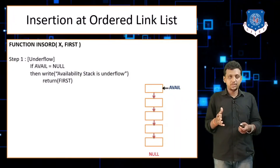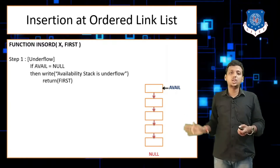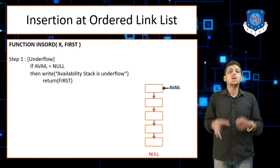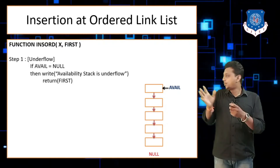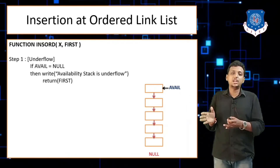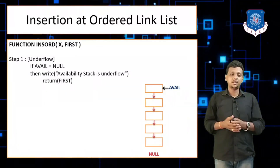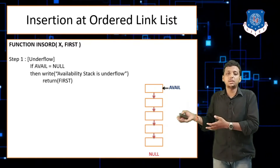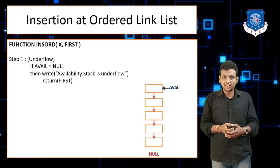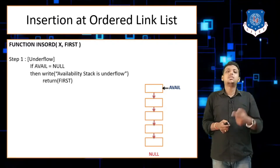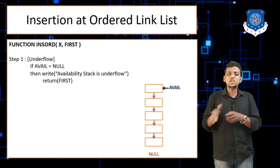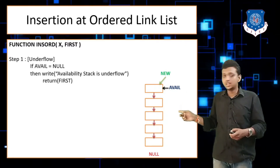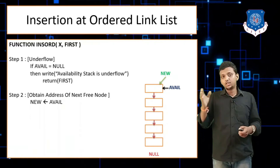When underflow occurs, write return first. In the insertion algorithm we return the value of the first node of the list — that is the pointer value, the address of our first node. If avail is not null, you can take a node from the availability stack and insert it. For this we use two steps common across all three insertion algorithms.